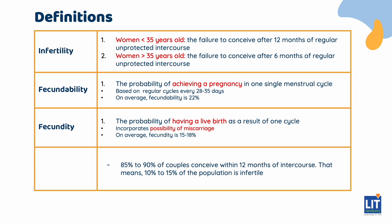To give everyone a good idea of what is normal and what is abnormal: 85 to 90% of couples conceive within 12 months of intercourse. That means 10 to 15% of the population is infertile, which represents the commonly cited statistic that infertility affects approximately one in six couples.